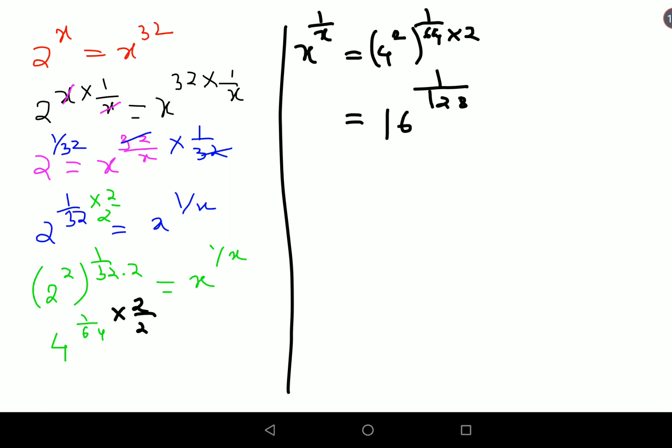Next, I will multiply both sides by 2 over 2. So then I am left with 16 raised to 2, the whole raised to 1 over 128 times 2. So here this comes out to be 256, and this is 1 over 256.